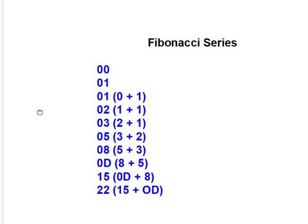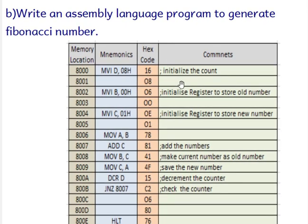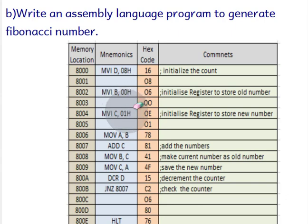The series can continue to infinity, but in our program we will only generate the first ten numbers. The tenth Fibonacci number will be stored in register A. We initialize the counter with MVI D, 08 — that is 8 — because we already know the first two numbers (0 and 1), and we generate eight more numbers after them.